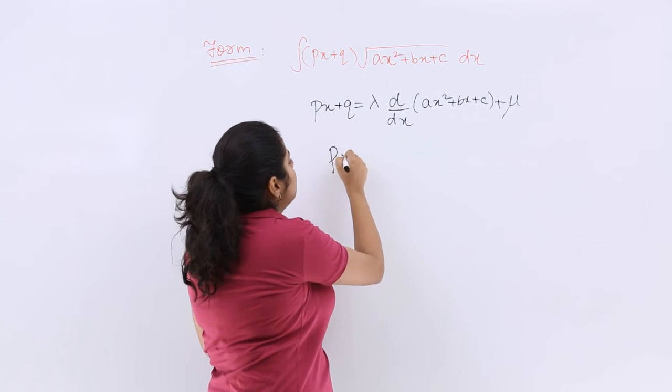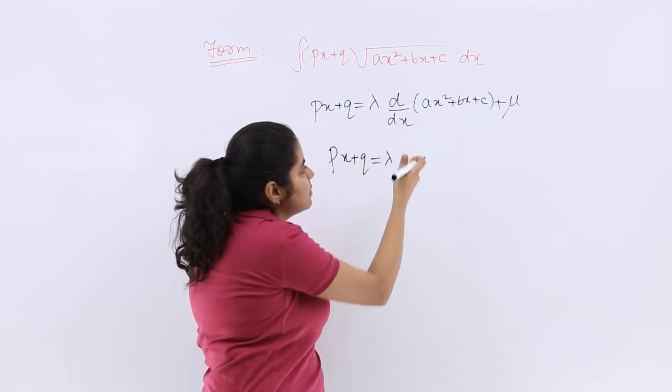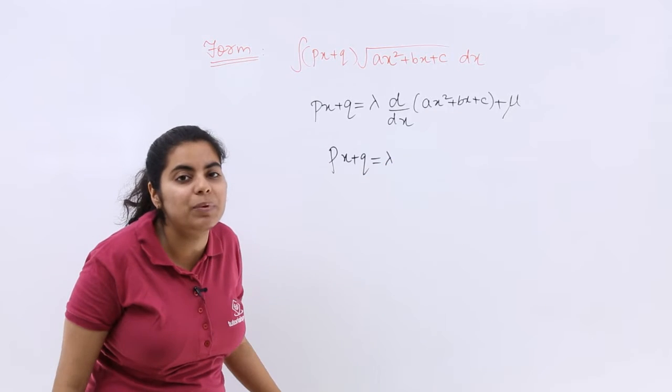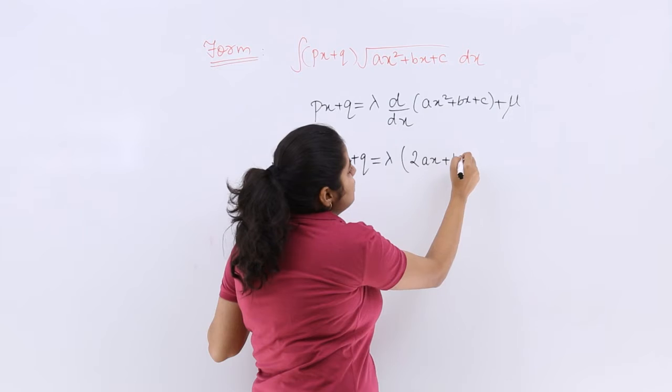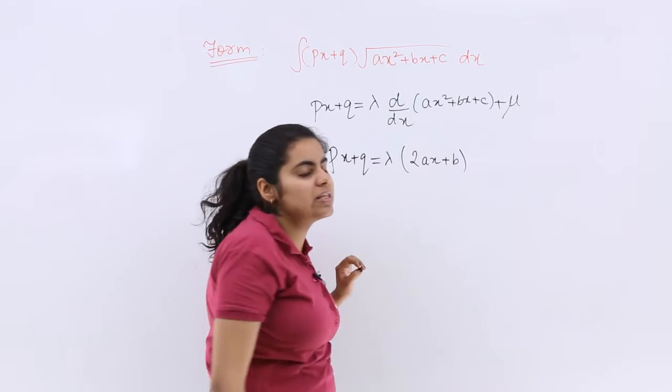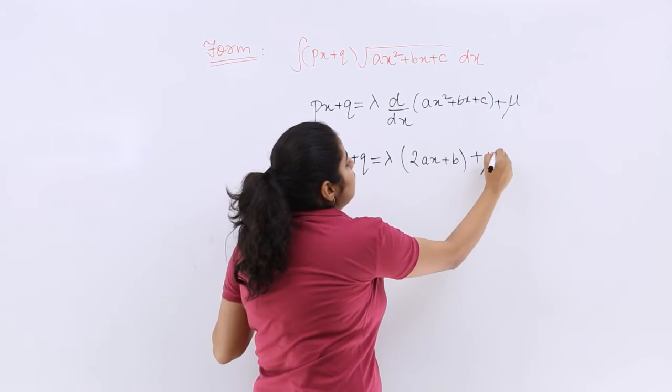See what will happen? Px plus Q will be remaining as it is. Lambda times the derivative of ax square plus bx plus c, which is 2ax plus b, right? Because c is a constant will give me 0 on derivative, plus mu.